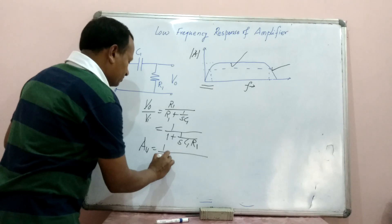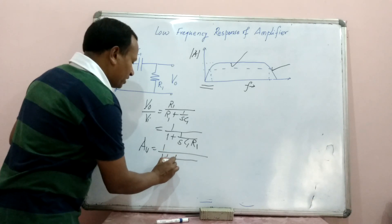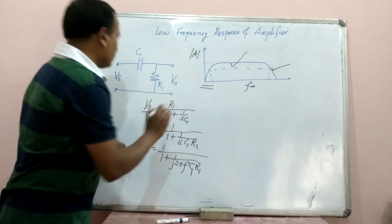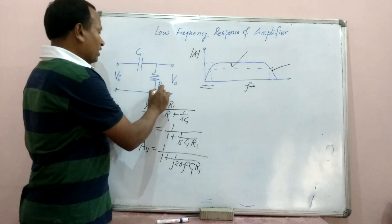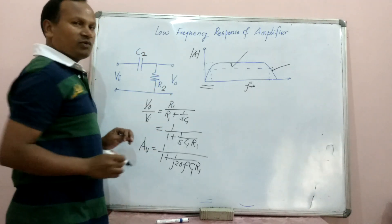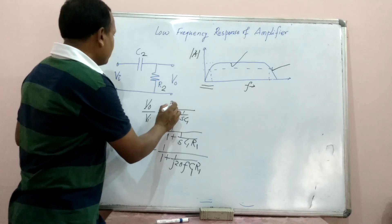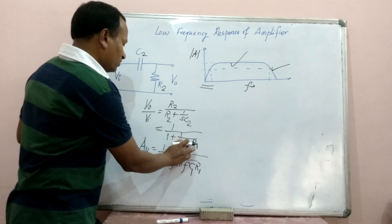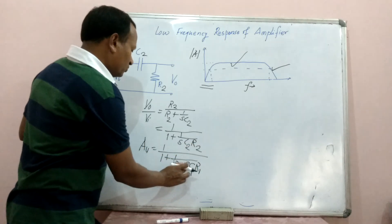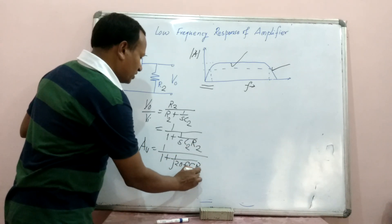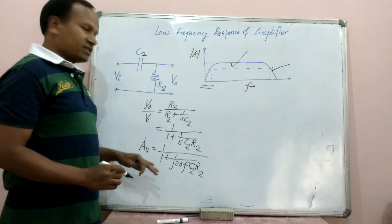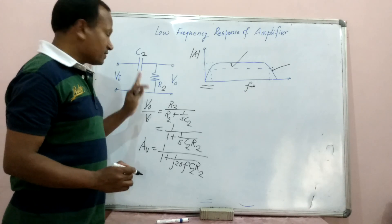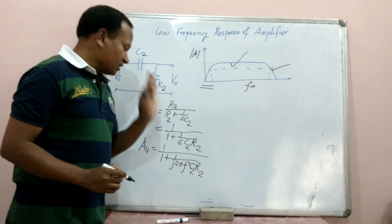Setting S equal to jω, where ω equals 2πF. We rename the components as R2 and C2 so we can differentiate them — otherwise there would be confusion. So the magnitude of gain of this particular circuit, where VI is the input signal and VO is the output signal, is written in terms of R2 and C2.